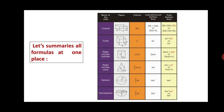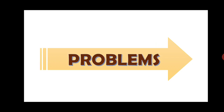Next is right circular cone: volume is (1/3)πR²H, curved surface area is πRL, and total surface area is πR(L + R). Next is sphere: volume is (4/3)πR³, and both curved surface area and total surface area are 4πR². Next is hemisphere: volume is (2/3)πR³, curved surface area is 2πR², and total surface area is 3πR². All these formulas are important for solving problems based on mixed 3D figures. Let us start.